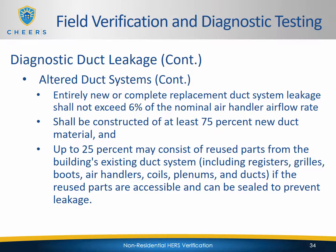For new duct systems in new construction, the leakage rate must not exceed 6% of the nominal air handler airflow rate. For the 2016 standards, residential dropped from 6% to 5%, whereas non-res has stayed at 6%. An entirely new or complete replacement duct system consists of at least 75% new duct material — including ductwork, wyes, register boots, and other components. The remaining 25% may consist of reused parts from the existing system if those parts are accessible and can be sealed to prevent leakage.